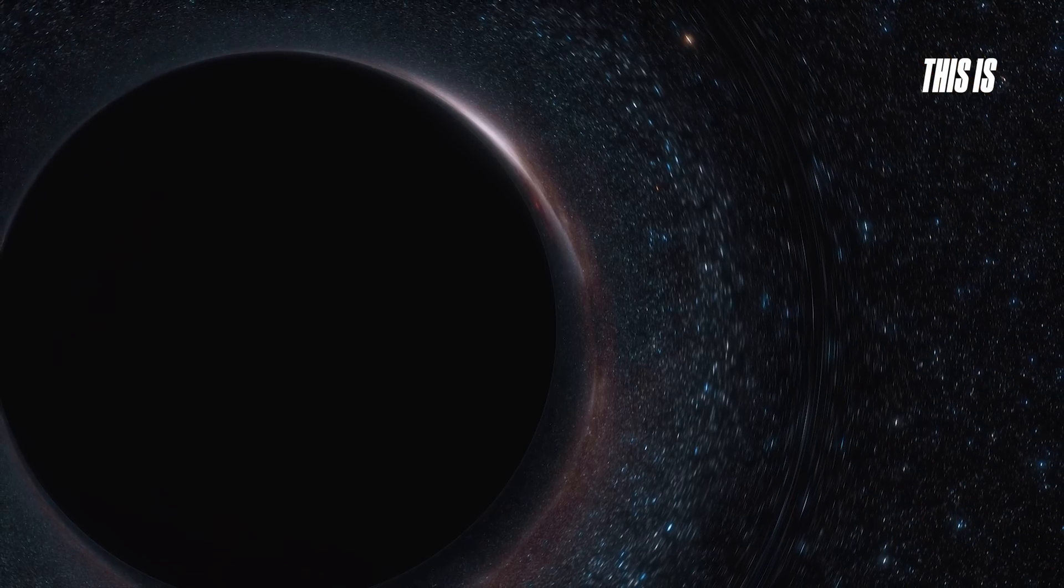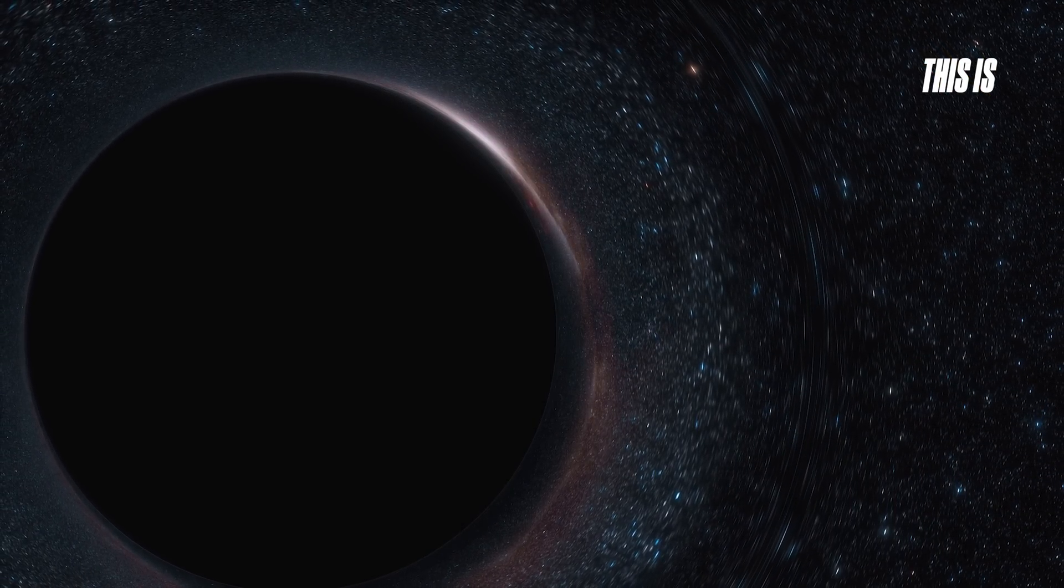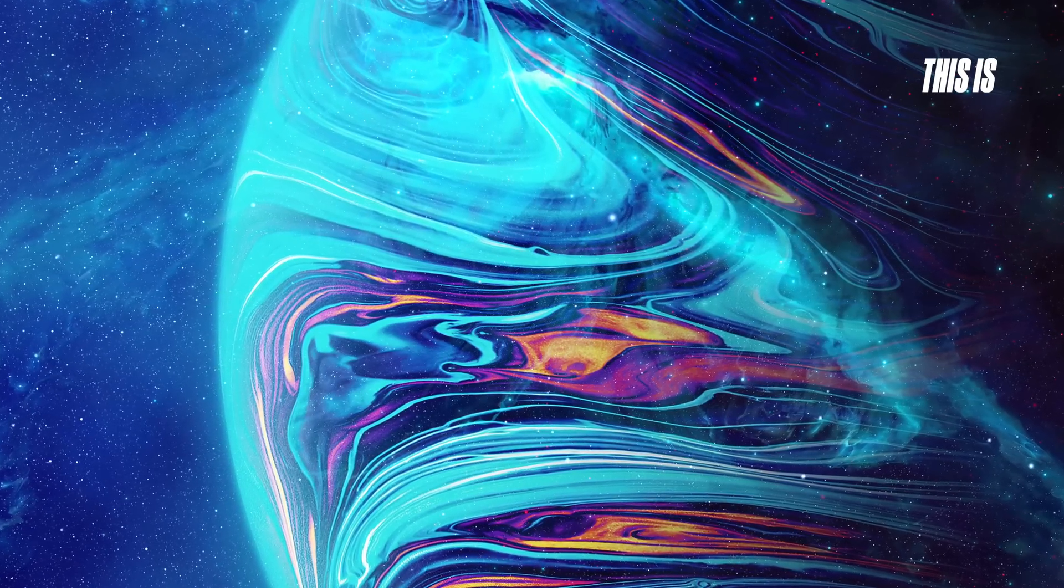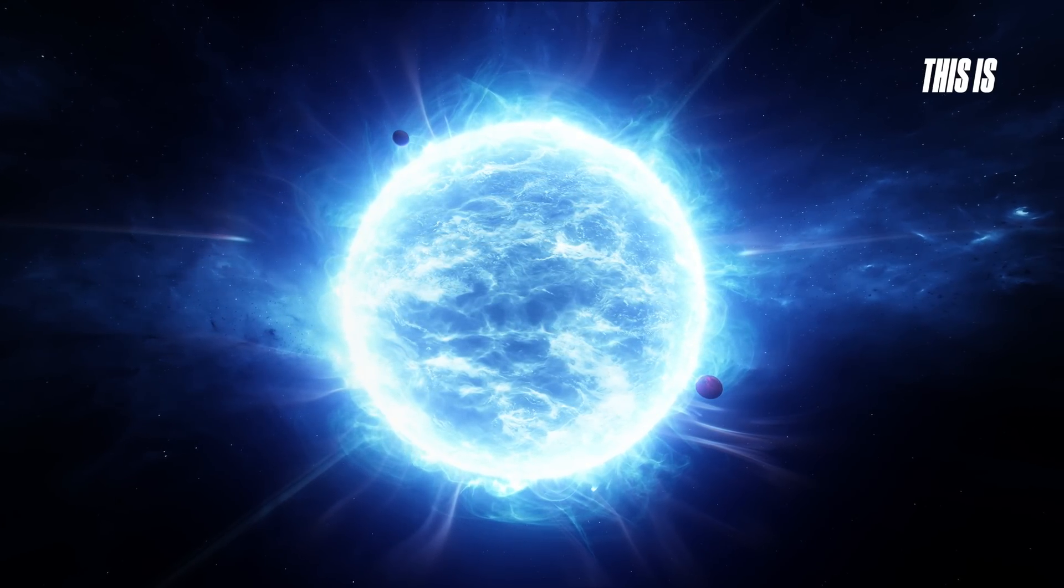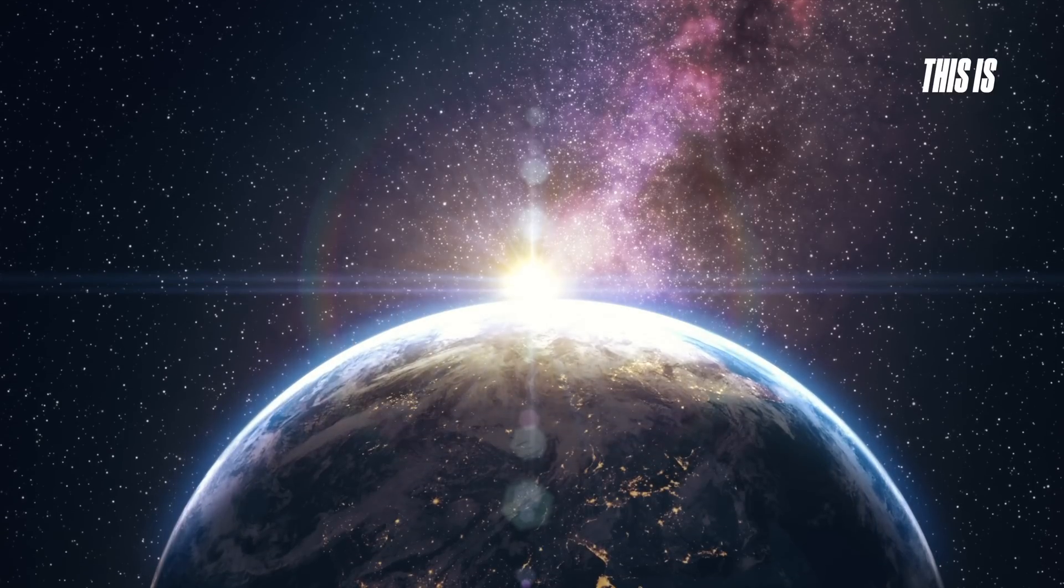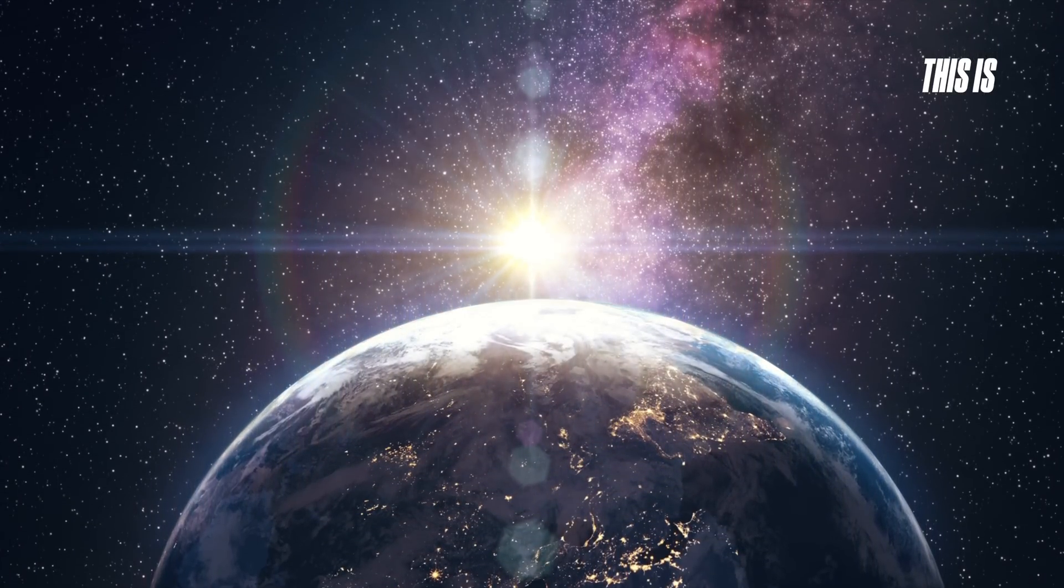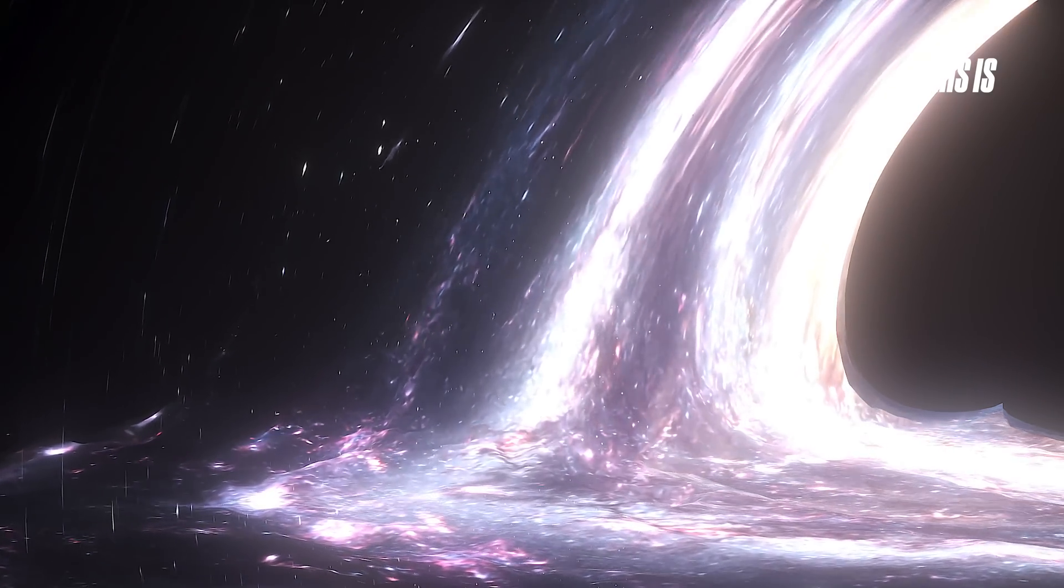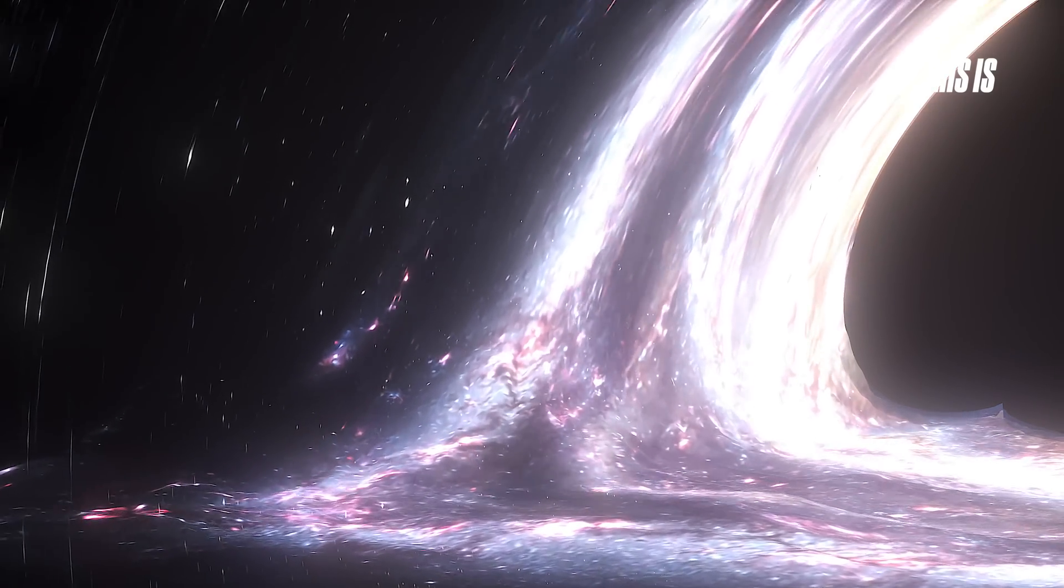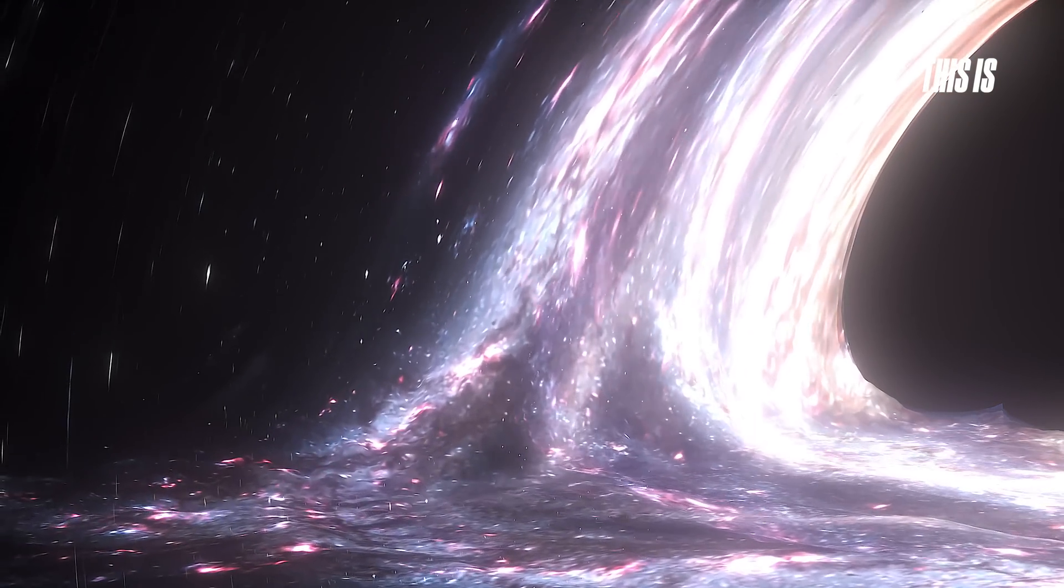A black hole is an extremely dense object with gravity so strong that not even light can escape. When we look at any other cosmic object—planets, stars, or neutron stars—we see that their gravity depends on mass and size. The heavier and smaller the object, the stronger its gravity. But a black hole takes this to the extreme. It is a point of infinite density where the very laws of physics as we know them break down.